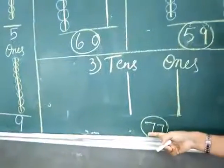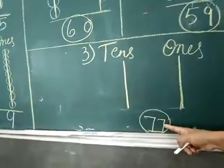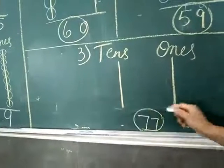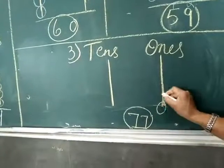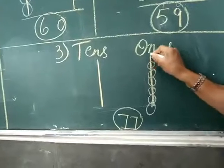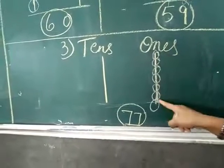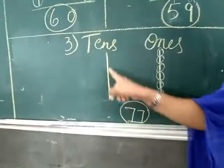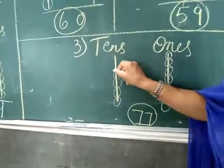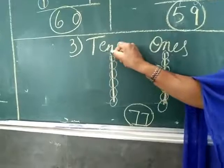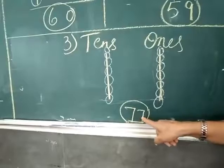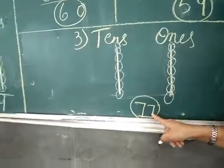Now look at seven and seven. In the ones place, you need to draw seven beads: one, two, three, four, five, six, seven — seven ones. And again in the tens place, draw seven beads: one, two, three, four, five, six, seven. Seven tens and seven ones is equal to seventy-seven.